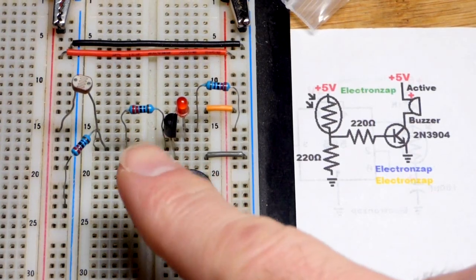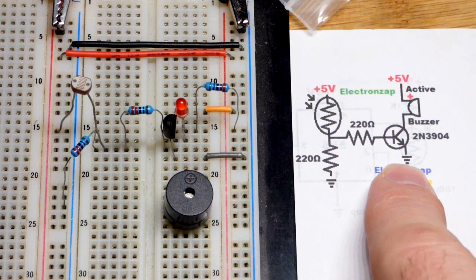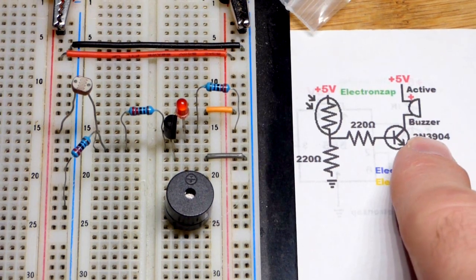So now in this video we're going to look at a bright light level indicator circuit and alarm actually, using an active buzzer.